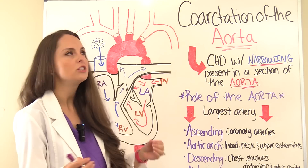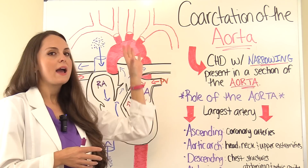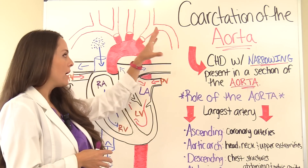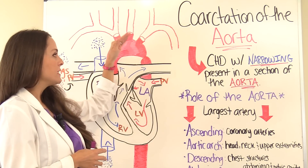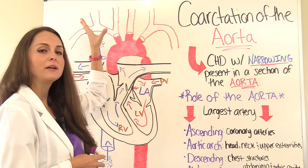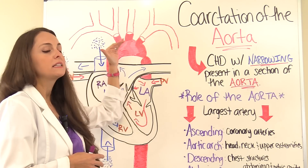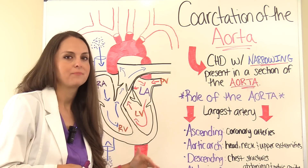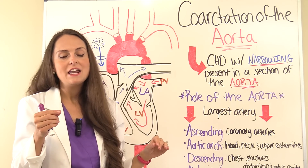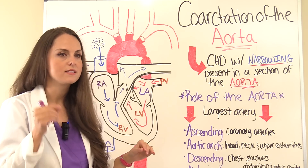The aorta delivers oxygenated blood by branching off into all these various arteries, which is why we have problems with an aorta that is narrow. Depending on where the aorta is narrow, the areas before the narrowing are going to experience higher pressure, and the areas after the narrowing are going to experience decreased pressure. Remember that — it's going to help you identify the telltale signs and symptoms.